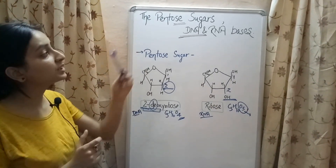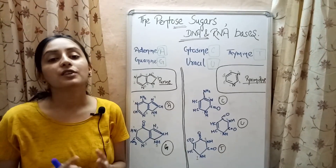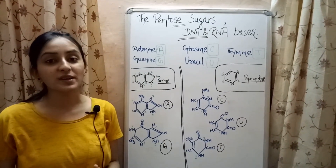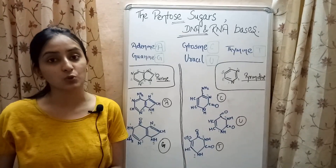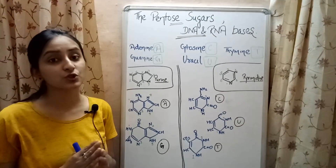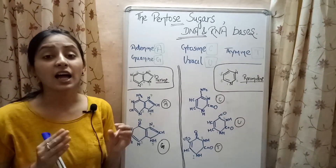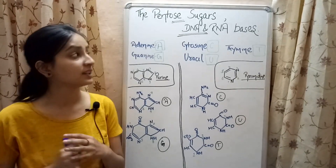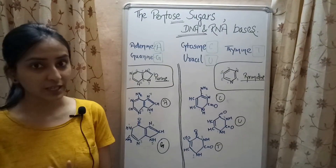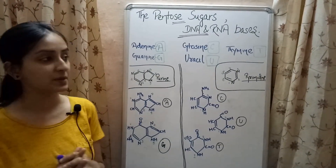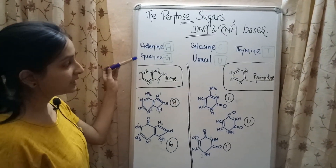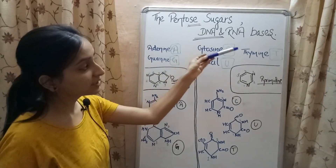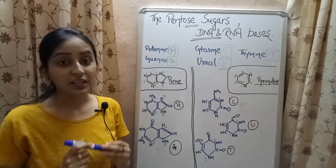Now let's move to the DNA and RNA bases. Nitrogenous bases, or nucleobases, refer to biological compounds containing nitrogen atoms, and they form an important part of the nucleic acids. There are 5 types of nitrogenous bases: adenine, guanine, cytosine, uracil, and thymine.